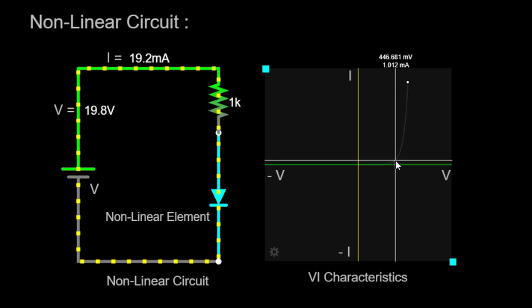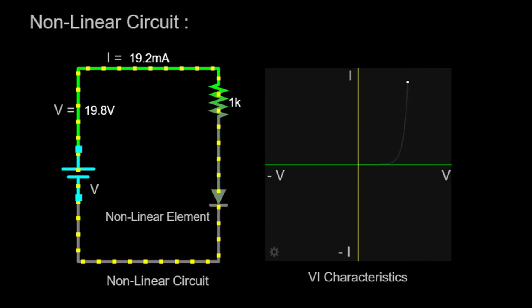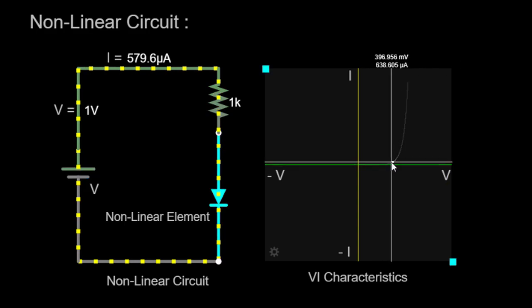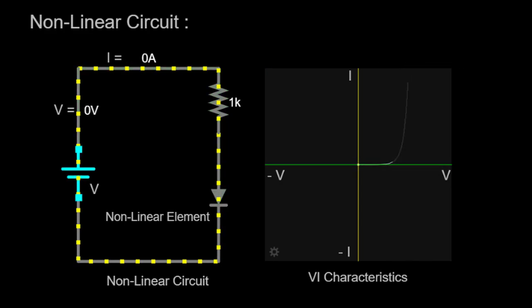However, as the voltage across the diode reaches a certain threshold, known as the forward bias voltage, an intriguing phenomenon occurs. The diode suddenly transitions into a conducting state, allowing current to flow through it. The graph demonstrates that the diode possesses a threshold voltage, typically around 0.6 to 0.7 volts for silicon diodes. Once this voltage is exceeded, the diode starts conducting in the forward direction, permitting a significant amount of current to pass through.